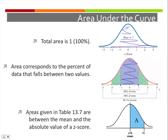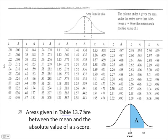To find percentages and areas, we use table 13.7. The areas given in this table are between the mean and the absolute value of a z-score — so between z = 0 and some positive z-score. Why doesn't it do negatives? Because at a negative z-score the area equals the corresponding positive z-score area, since the curves are symmetrical. So if you're dealing with a negative z-score, just look up the positive one. Area is always positive.